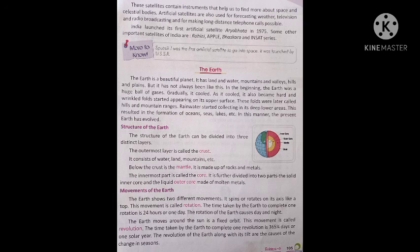India launched its first artificial satellite Aryabhatta in 1975. Some other important satellites of India are Rohini, Apple, Bhaskara and the Insat series. More to know: Sputnik I was the first artificial satellite to go into space — it was launched by the USSR.